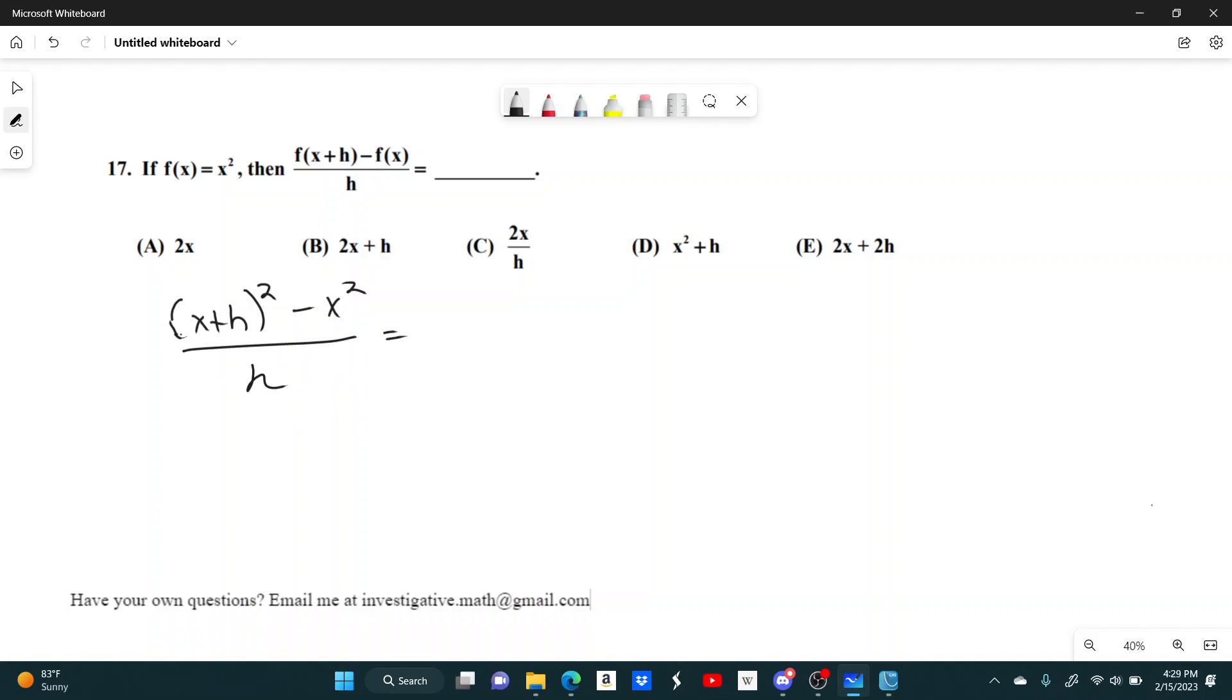Let's expand some of this out. x plus h squared, that'll be x squared plus 2xh plus h squared, and then minus x squared, and then we're dividing all of that by h.